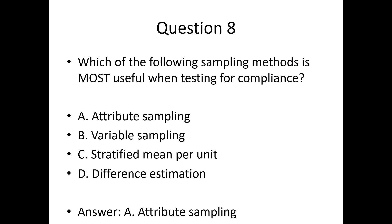Answer: A. Attribute sampling. Explanation: Attribute sampling is used to estimate the rate of occurrence of a specific attribute in a population, making it ideal for compliance testing where the presence or absence of a control is evaluated.